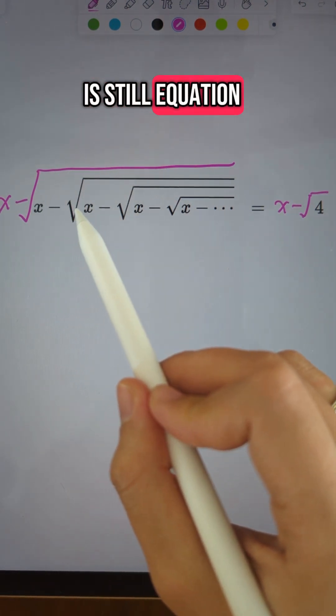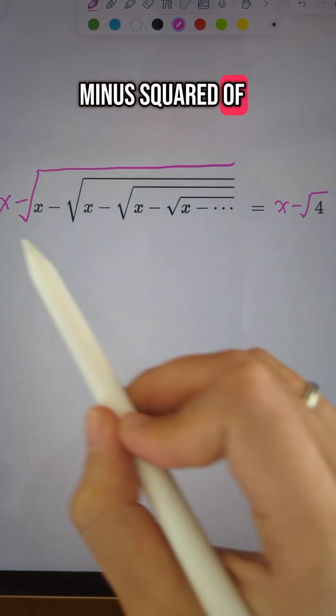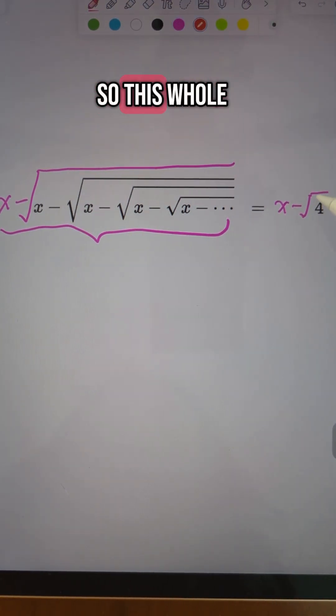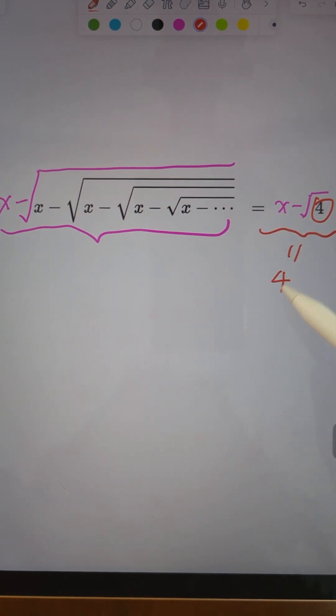the left, it's x minus square root of x minus square root of x minus dot dot dot... It goes back to the original expression, so this whole thing is basically 4, which means the right-hand side is 4.